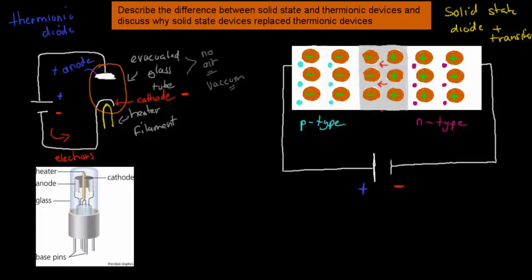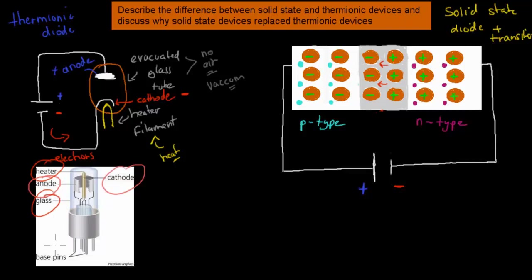We also have a heater filament, which will obviously produce heat as the name suggests. You can see all the same stuff in this picture — we've got the anode, which is a metal part, the cathode, which is a metal piece as well, the heater on top, the evacuated glass tube, and the base pins. What happens is this heater filament heats up and it will actually heat up the cathode.